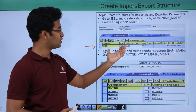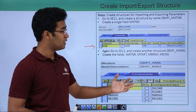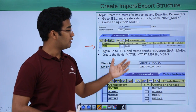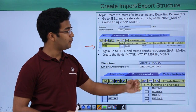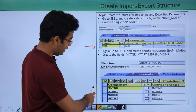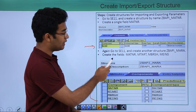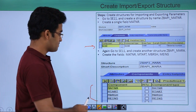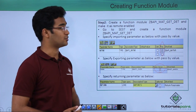Then we have created one structure, and we will create another structure by repeating our steps. We will create another structure in ABAP dictionary, that is SE11. This time we have named it as ZBAPI_MARA. Here we are also creating all these fields: MATNER, MTART, MBRSH, and MEINS. These two structures have been created — these are our importing and exporting structures.